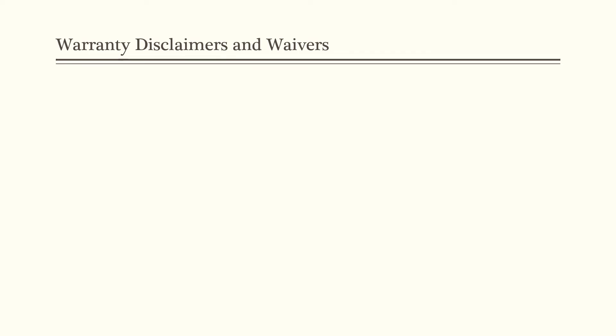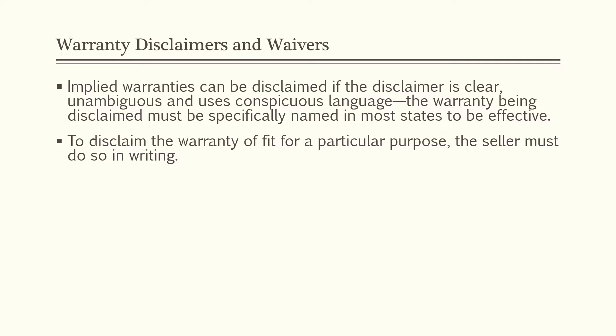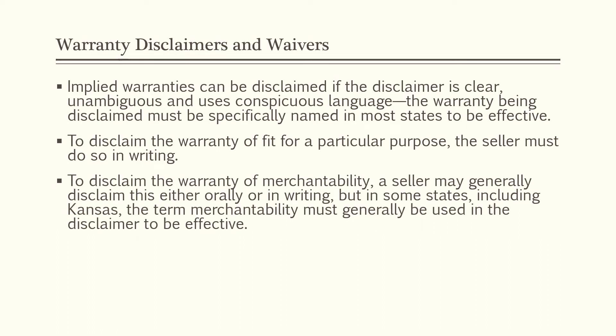Now we'll discuss warranty disclaimers and waivers. Implied warranties can be disclaimed if the disclaimer is clear, unambiguous, and uses conspicuous language. The warranty being disclaimed must be specifically named in most states to be effective. To disclaim the warranty of fitness for a particular purpose, the seller must do so in writing. To disclaim the warranty of merchantability, a seller may generally disclaim either orally or in writing, but in some states including Kansas, the term 'merchantability' must generally be used in the disclaimer itself. In Kansas, the seller must specifically use the word 'merchantability' unless the sale is disclosed as as-is or with all faults, or has other language that calls the buyer's attention to the exclusion of warranties.